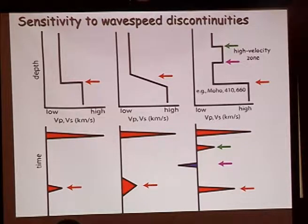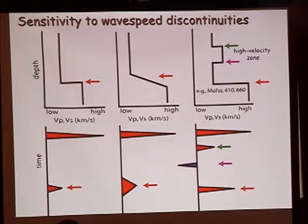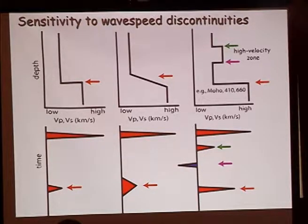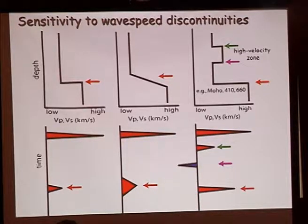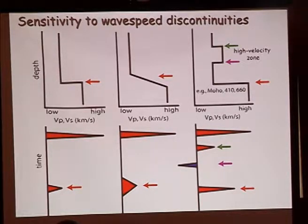Low velocity zones are sometimes very difficult to see with travel times because we usually pick the first arrival, which tends to find the fastest path from point A to point B — skirting around low velocity zones. Travel time tomography is therefore harder for finding low velocity zones than high velocity zones. Receiver functions, however, are just as sensitive to low velocity zones as to high velocity zones.